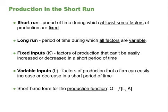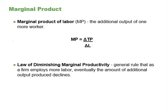Variable inputs are those that can easily be increased or decreased in a short period of time. The pizza restaurant can order more ingredients with a phone call, and the owner could hire a new person quickly — so ingredients and workers are variable inputs. We should also introduce a critical concept: marginal product. Marginal product of labor is the additional output of one more worker. Mathematically, marginal product is the change in total product divided by the change in labor. The law of diminishing marginal productivity states that as a firm employs more labor, eventually the amount of additional output produced will decline, all else equal.